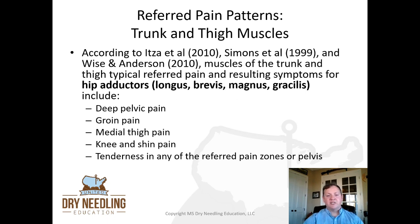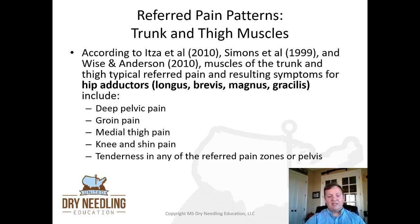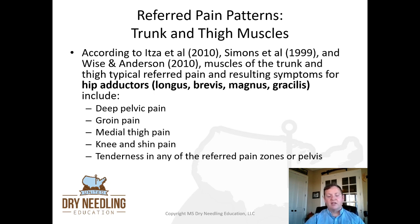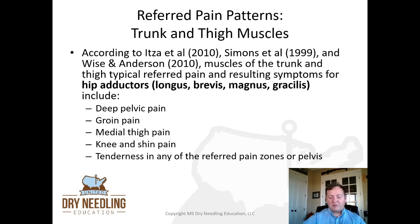When we talk about the adductors, we group them all together — the longus, the brevis, the magnus, and the gracilis. They can all give you deep pelvic pain, groin pain, medial thigh pain, knee and shin pain, and tenderness in any of the referred pelvic pain zones. When I'm doing a treatment setup for genital pain, which you'll learn later in this course, I always include the adductors along with that because they refer up to the groin and deep into the pelvis.